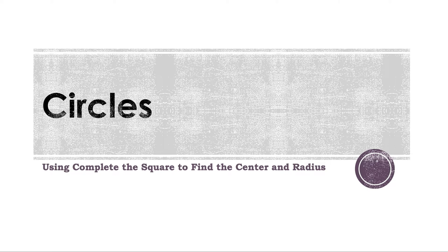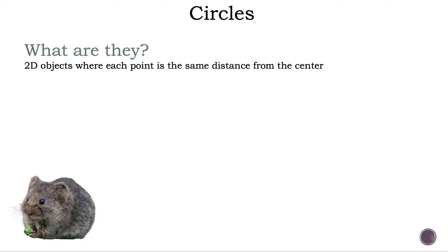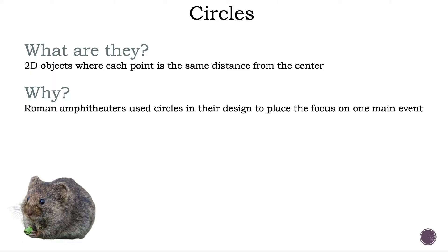Circles. Using complete the square to find the center and radius. What are they? 2D objects where each point is the same distance from the center. Why? Roman amphitheaters use circles and they're designed to place the focus on one main event.